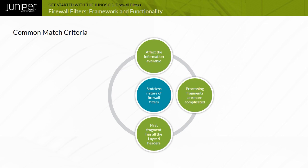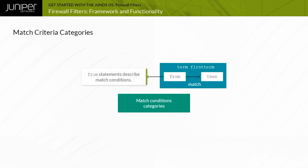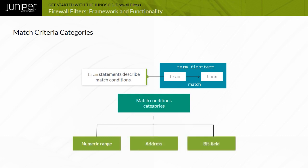Junos OS still attempts to evaluate the layer 4 headers, but the second and subsequent fragments do not contain these headers, so matches are unpredictable. Match conditions fall into three categories: numeric range, address, and bit field match conditions.